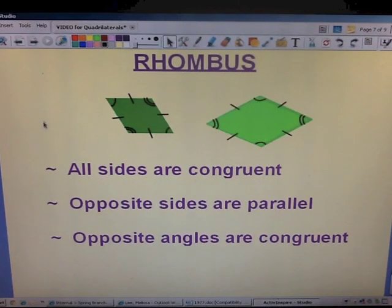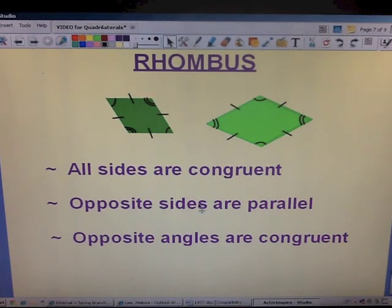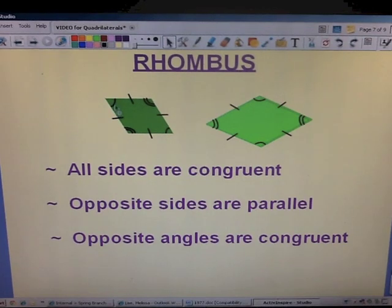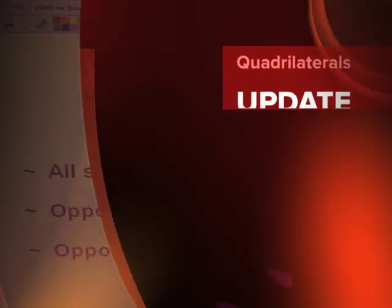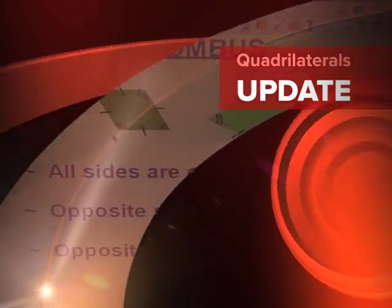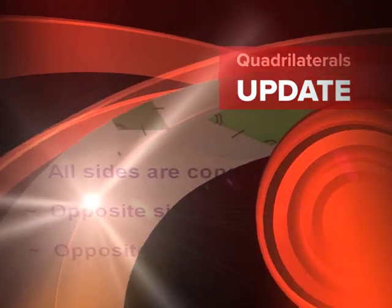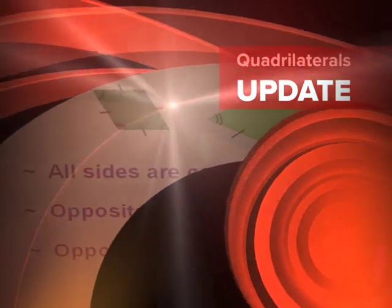In a rhombus, all sides are congruent — look at the tick marks; they each have one. Opposite sides are parallel, and opposite angles are congruent. Look at the angles: the top left and the bottom right each have one little curved angle mark, so they are congruent angles. The top right and the bottom left each have two curved marks, so those two are congruent angles — they are equal and measure the same.